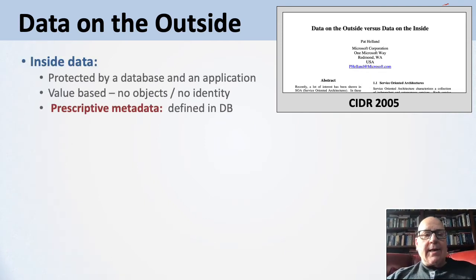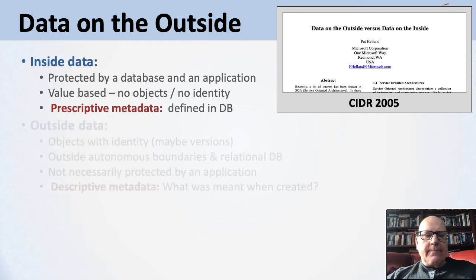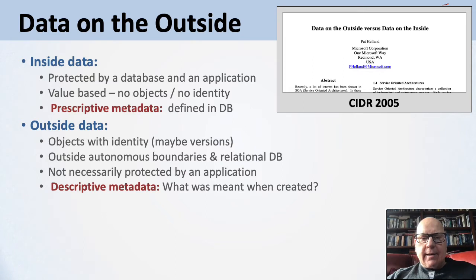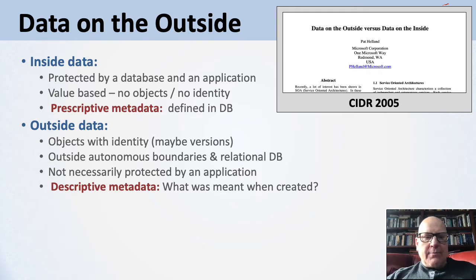Inside data is classic relational data — protected by a database in an application. If relational, it uses values and relates them; there's no formal notion of objects and identity. The shape and form of the data is prescribed — you can change it over time as you talk about what's in tables with rows and columns. Outside data is different — it ends up being objects with identity and maybe versions. It's outside autonomous boundaries, outside the database and the application, pushed out into the world to be shared across boundaries. It's typically not protected by an application, and what you wrote meant what you meant when you wrote it. So there's a notion of descriptive metadata — what was meant when it was created — sometimes contained inside the object itself like in JSON or XML.